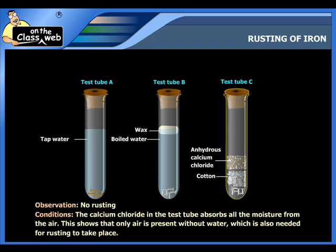No rusting takes place in this test tube also. This is because the calcium chloride in the test tube absorbs all the moisture from the air. This shows that only air is present without water, which is also needed for rusting to take place.